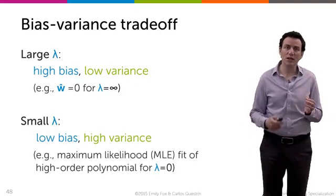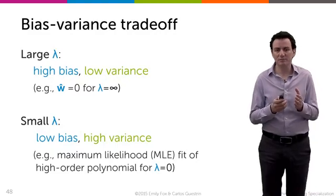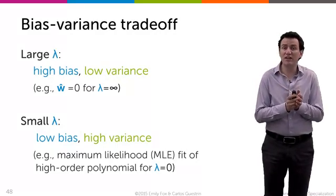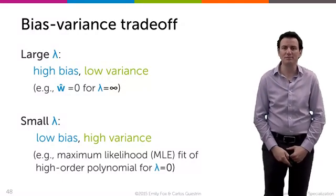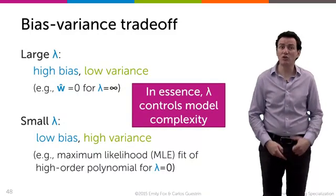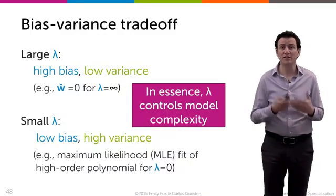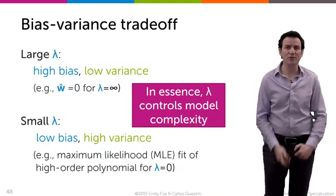If lambda is very small, you get a very good fit to the training data, so you have low bias, but you can have a very high variance. If the data changes a little bit, you get a completely different decision boundary. And so in essence, lambda controls the bias-variance trade-off for this regularization setting in logistic regression or in classification, just like it did in regular regression.